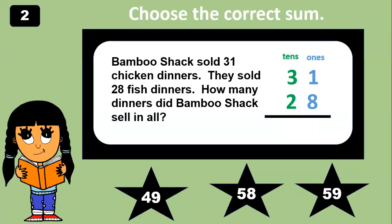Bamboo Shack sold 31 chicken dinners. They sold 28 fish dinners. How many dinners did Bamboo Shack sell in all? Don't forget the steps. Step one, add the ones. Step two, add the tens. Can you figure out the sum? 59. Good job. One plus eight equals nine. Three plus two equals five. So the sum is 59.